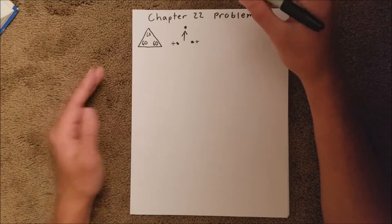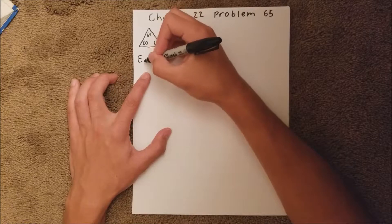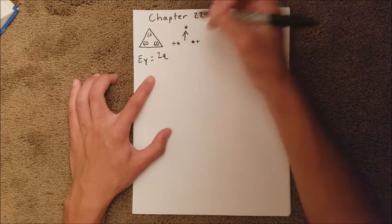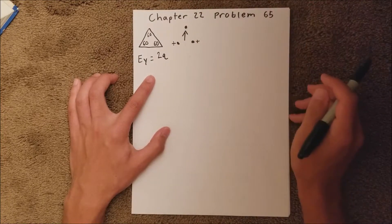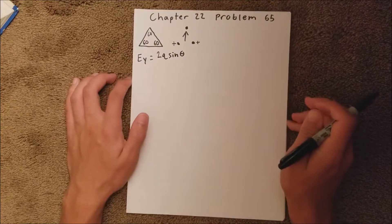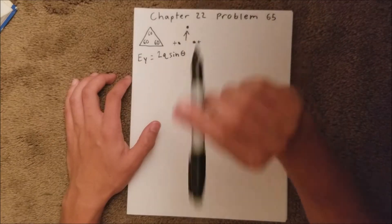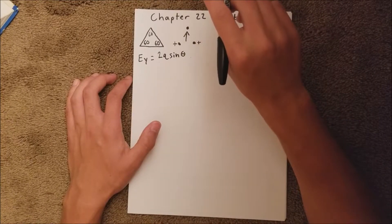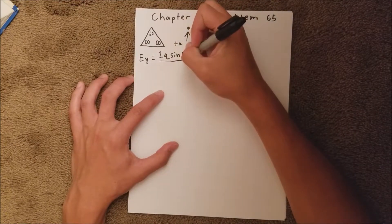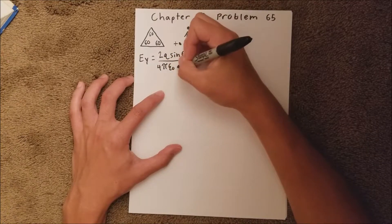This is essentially all in the y direction. So we can say the electric field in the y direction is equal to 2q, so two charges, which is these two, affecting the third. And we're going to go upward sine theta, because it's really pointing this way, but we have to find the y component of the electric force. So that's over 4 pi epsilon sub 0, r squared.